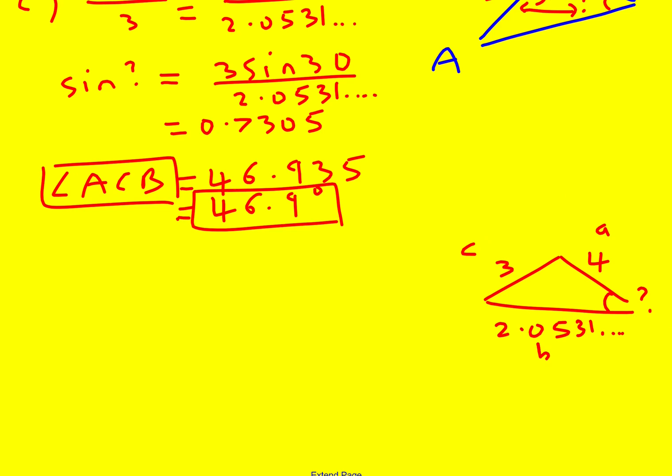And I can write down C squared is equal to A squared plus B squared minus 2, not 3, 2 times A times B times cos question mark.